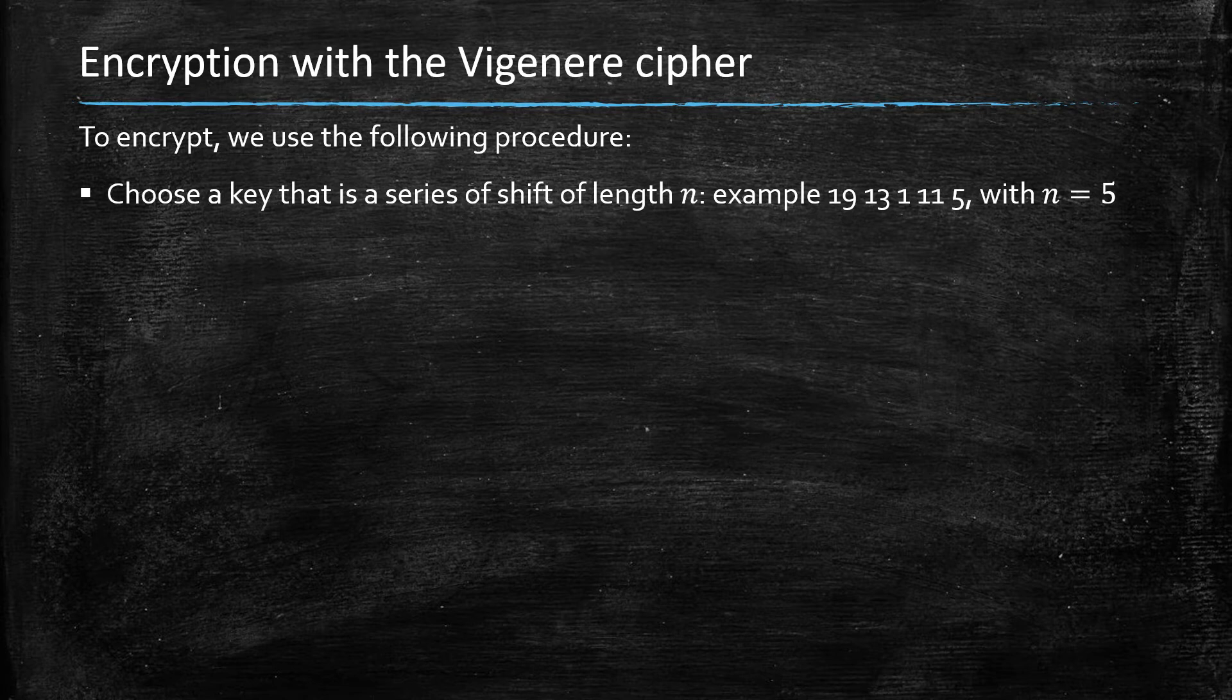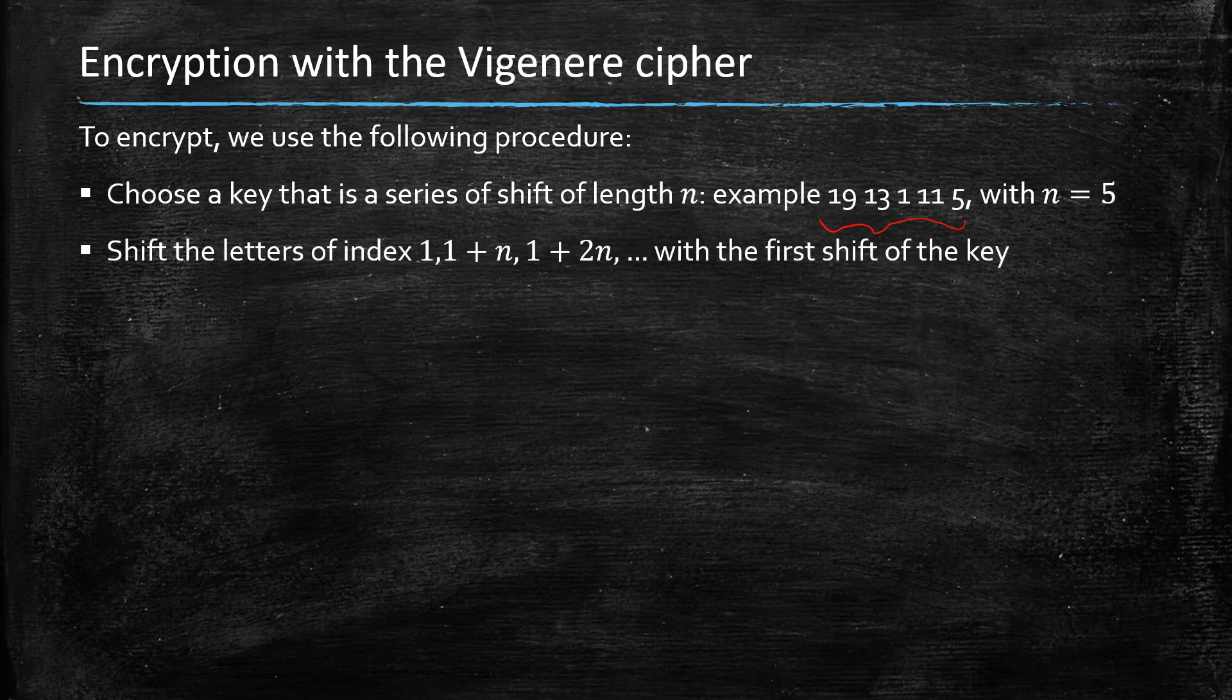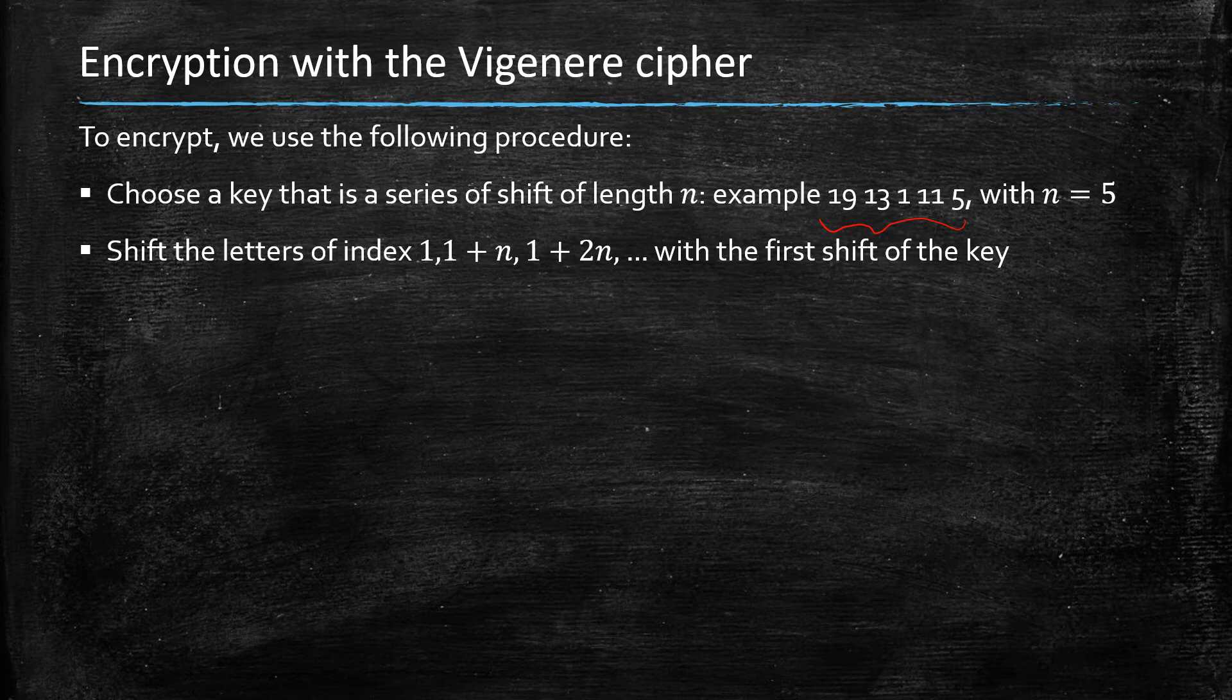The way to do it is to choose the length of your series of shifts. So for example, if we choose a series of shifts of length five, then this is an example that I could possibly think of: 19, 13, 1, 11, and 5.